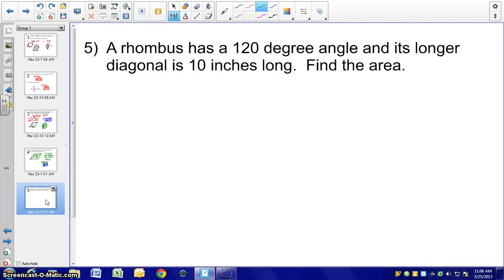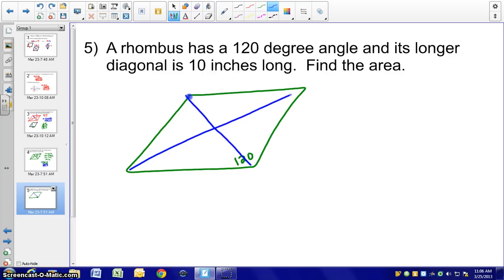And our last example. A rhombus has a 120 degree angle and its longer diagonal is 10 inches long. Find the area. Again, draw your rhombus. We know one angle is 120 degrees. Well, from this diagram, we definitely know that would be the larger, the obtuse angle there. And if we go ahead and draw in our diagonals, we know diagonals bisect the angles. So we would have a 30, 60, 90 degree triangle in there. We also know its longer diagonal is 10. Well, the longer diagonal is definitely going to be the one that's stretched at the vertices. So what I'm highlighting there in black, we would know that would be bisected into 5 and 5.